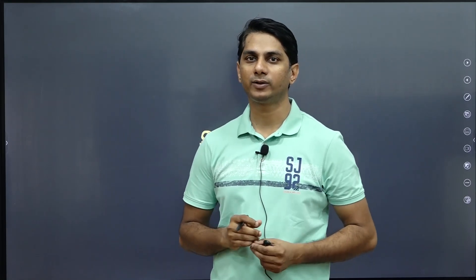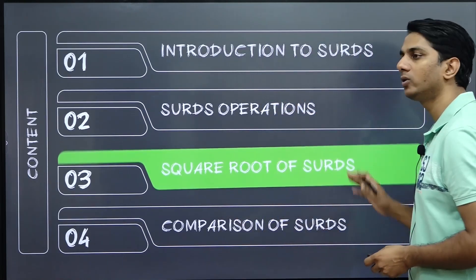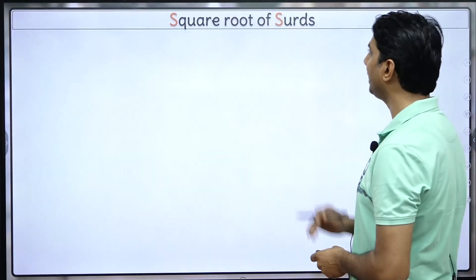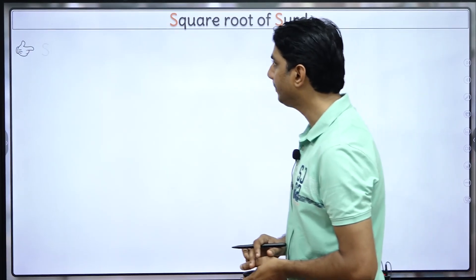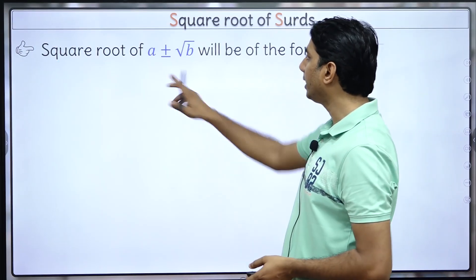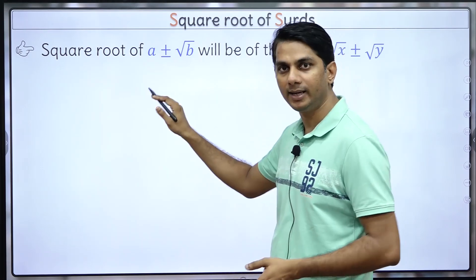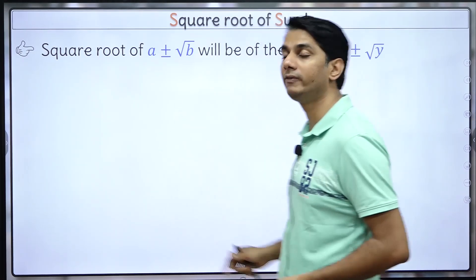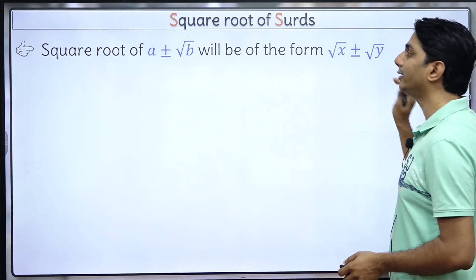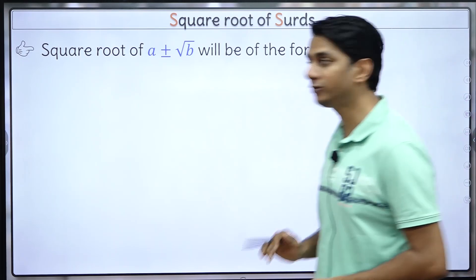Hi, so in this session let's look at how to calculate square root of a surd. In the previous video on surds, we have already covered the basics of surds and rationalization of surds. Now let's see how to calculate square root of surds. If you have to calculate square root of a ± √b, the square root will always be of the form √x + √y or √x - √y.